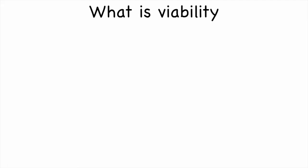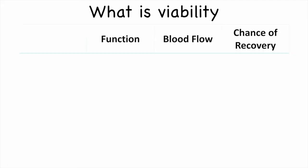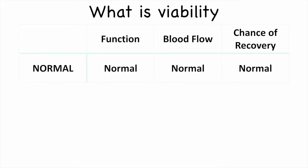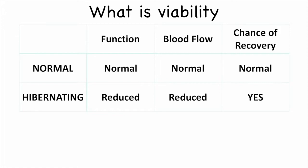Looking deeper into viability assessment, we assess each myocardial segment based on its function, its blood flow, and the chance of recovery. A normal myocardium will have normal function, normal blood flow, and no need to recover. Hibernating myocardium has reduced blood supply leading to reduced function, but if we improve the blood supply, its chance of recovery is good — this is what we call viable myocardium.